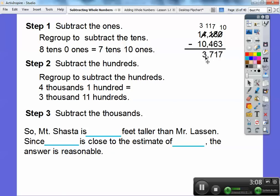So Mount Shasta is how much taller than Mount Lassen? It's 3,717. Since 3,717 is close to our estimate of 4,000, the answer is reasonable. Mount Shasta is 3,717 feet taller than Mount Lassen.